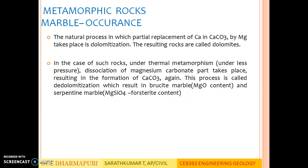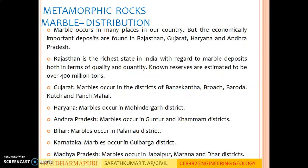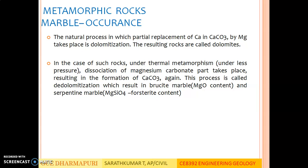The natural process in which partial replacement of calcium in calcium carbonate by magnesium takes place is known as dolomitization. The resulting rocks are called dolomites. In the case of such rocks, under thermal metamorphism with less pressure, dissociation of magnesium carbonate takes place, resulting in the formation of calcium carbonate again. This process is called de-dolomitization, which results in russet marble having MgO content and serpentine marble having MgSiO4 (forsterite) content.